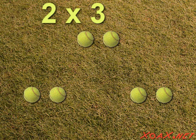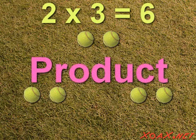Counting out all of the tennis balls that we have, we get 1, 2, 3, 4, 5, 6. So 2 times 3 equals 6. 6 is called the product of 2 and 3.